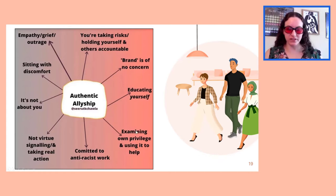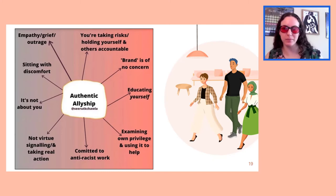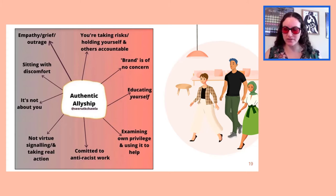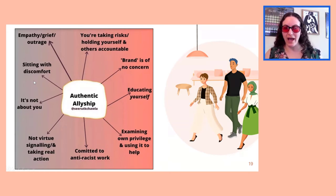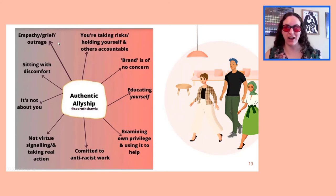We need to examine our own privilege and use it to help, knowing it's not about us. Even when you're doing all this work and people aren't seeing it, it's not about us — it's about whether we're actually helping the communities we want to. Authentic allyship means sitting with discomfort, expressing empathy, grief, and outrage, educating yourself rather than depending on marginalized groups to explain everything to you, taking risks, and holding yourself and others accountable. Allyship is deliberate and continuous — you'll make mistakes, but give yourself grace and keep moving forward.